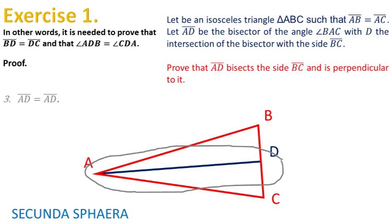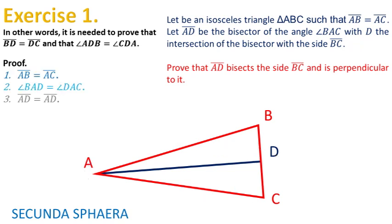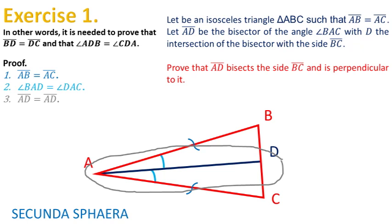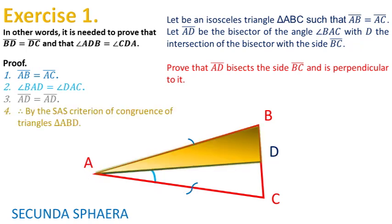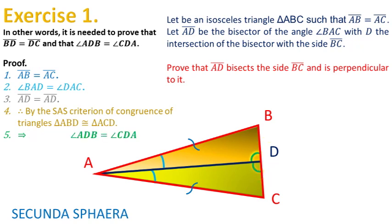With all the formal information, attention ought to be focused on the triangles ABD and ACD. Those triangles have the side AD in common, the respective sides AB and AC are equal, and their corresponding angles between those sides — the angles BAD and DAC — are equal. The triangles ABD and ACD have the properties required for the SAS criterion of congruence of triangles. Therefore, triangles ABD and ACD are congruent. This implies that their corresponding sides BD and DC are equal. Also, the pair of corresponding angles ADB and CDA will be equal, and the pair of angles ABD and ACD will be equal.